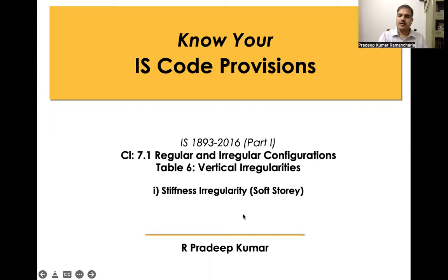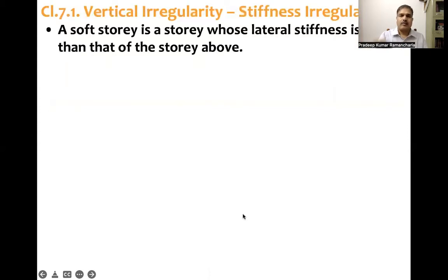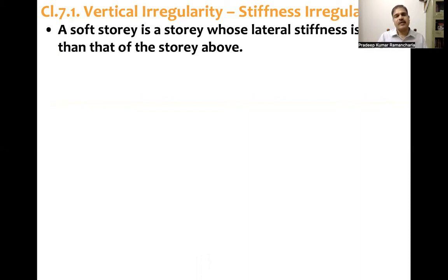Stiffness irregularity — that is, soft story. A soft story is a story whose lateral stiffness is less than that of the story above. If a structure has n number of stories, you compute the lateral stiffness of each story and check if the lateral stiffness of any story is less than the story above. If it is less, then it is called a soft story.